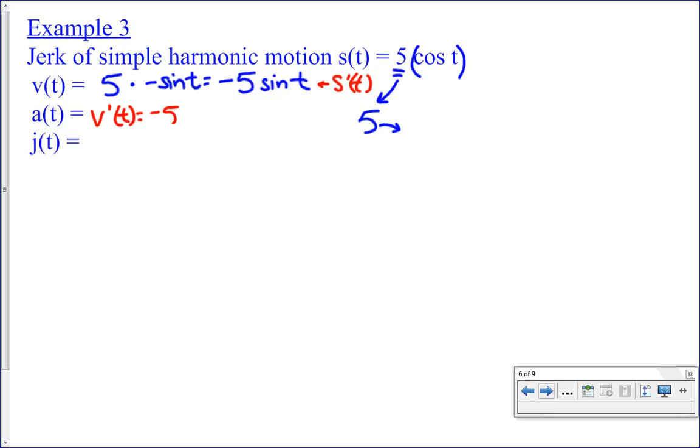I need to take the derivative of velocity. This right here is the same thing as taking the derivative of position. This is the derivative of velocity. So, it's negative 5 times what's the derivative of sine? Cosine t. Therefore, it's negative 5 cosine t. That's the acceleration.